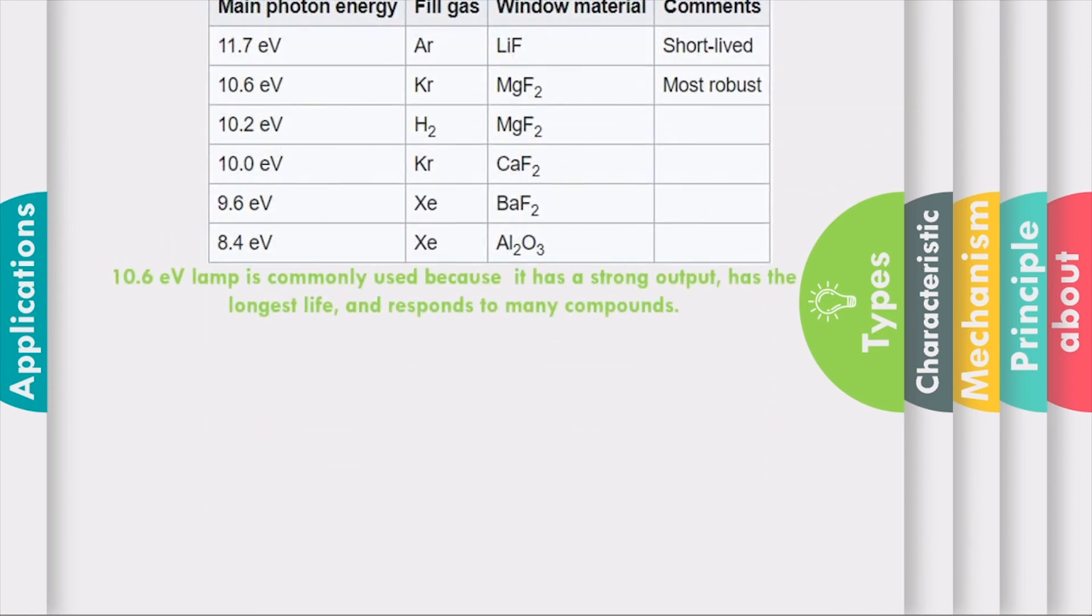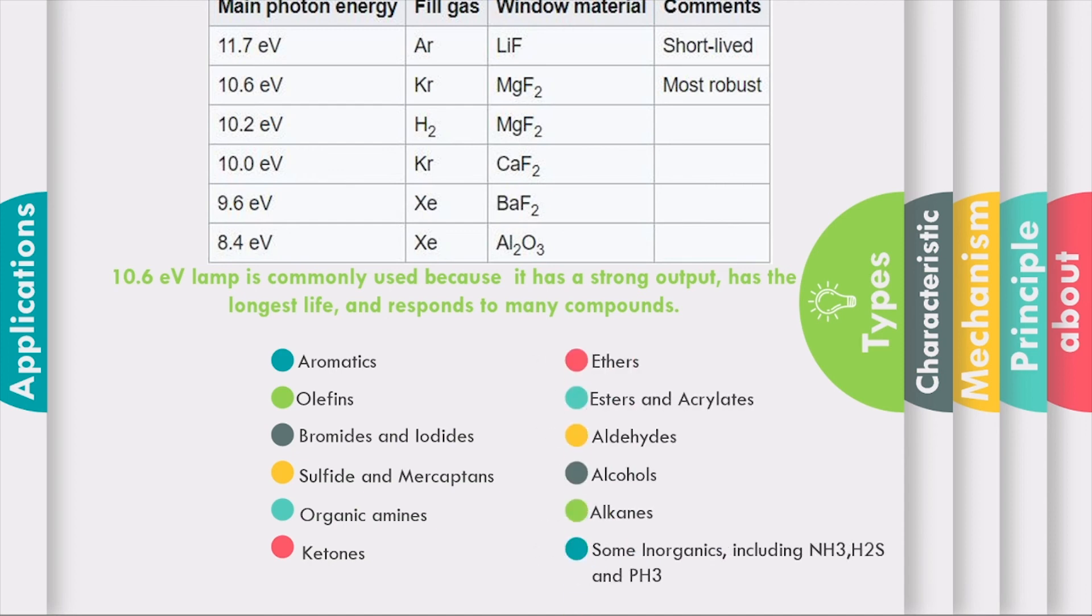With that said, 10.6 electron volts lamp is commonly used because it has a strong output and has the longest life and responds to many compounds. Compounds like aromatics, olefins, bromides, iodides, sulfides and mercaptans, organic amines, ketones, ethers, esters and acrylates, aldehydes, alcohol, alkanes, and some inorganics including NH3, H2S, and PH3.